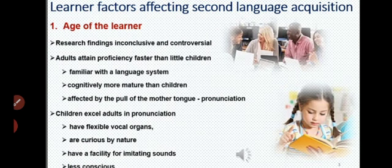Today we are going to discuss about factors related to the learner. First of all, age of the learner. Learner की आयु दूसरी भाषा को सीखने में एहम भूमिका निभाती है. It plays an important role to learn a new language. Many research findings declare that adults attain proficiency faster than little children.